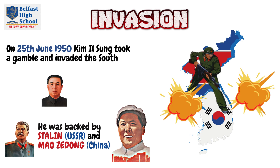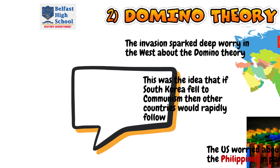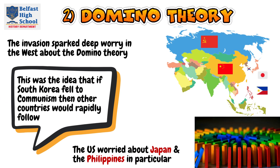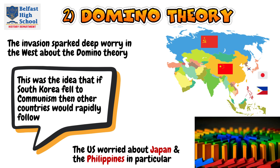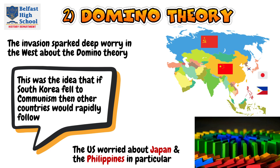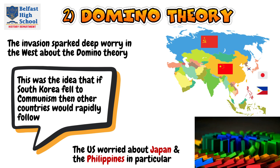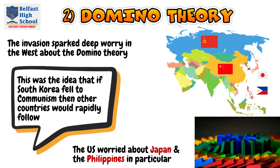The invasion creates a huge worry across the Western world. The first worry they had was the idea of the domino theory — the idea that if South Korea fell to communism, then other countries across the world would rapidly follow. The United States was particularly worried, if you remember back to that map, about Japan and the Philippines in particular.